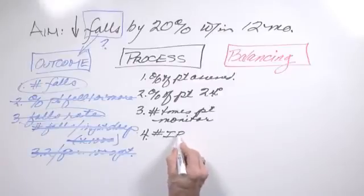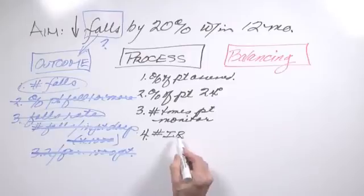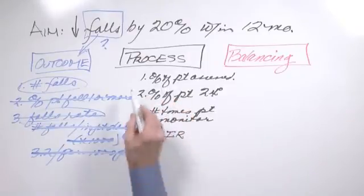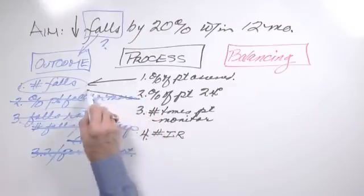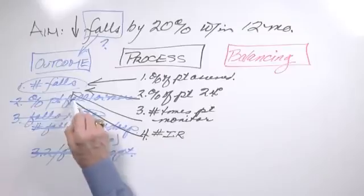There's a program called intentional rounding, IR, where nurses or nurse assistants make rounds on patients regularly. So now what we've done is we've identified three process measures that we believe have an impact on changing the falls that we're observing.